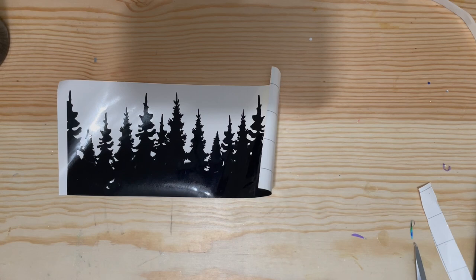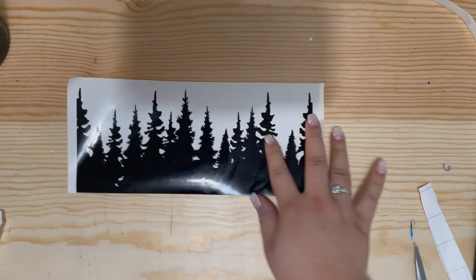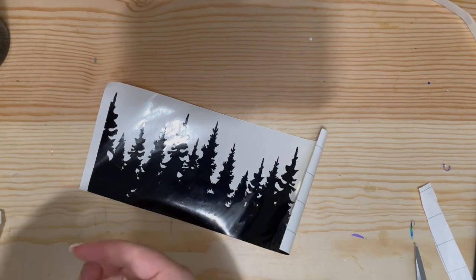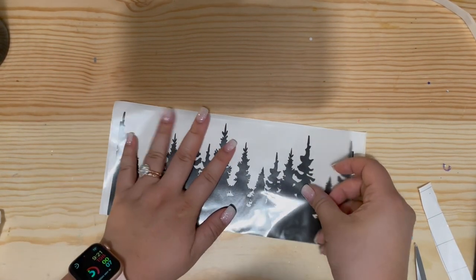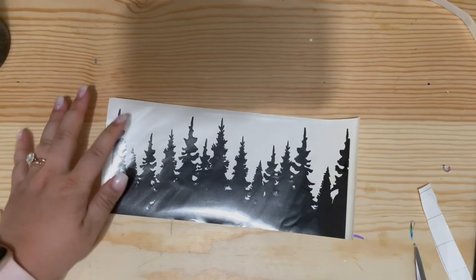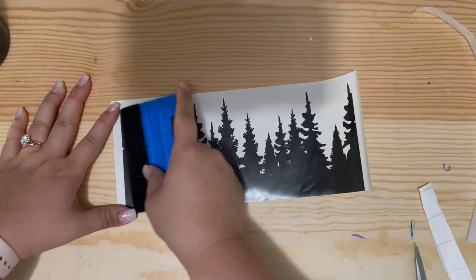I'm going to wrap my decal around to make sure that it is going to line up. And then I am going to make my hinge. You know me, I love to make my little hinges and apply this cute little decal onto the tumbler.